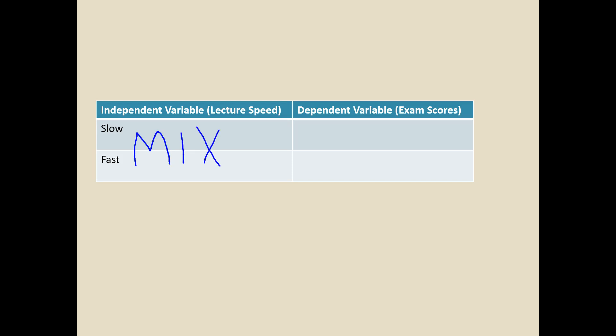Therefore, we should have a pretty good mix of students in both classes. Some are highly motivated. Some are lowly motivated. Some are average motivation. But the point is now these two classes should be really similar to each other with one exception. The only major difference we have now is the rate of lecturing.